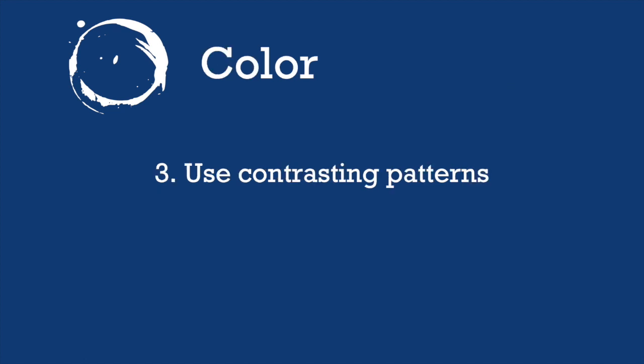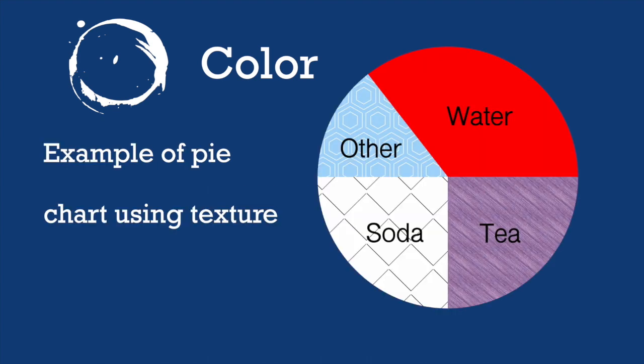Tip number 3 tells us to use contrasting patterns rather than just contrasting colors when designing our web pages. This is an example of a pie chart that uses texture to separate its pieces rather than just color. A person who is color blind would be able to see the differences in these patterns. Notice that each piece of the pie chart is labeled in dark text that is large and easy to read. Ideally, this pie chart would also include the percentages that go along with each piece.